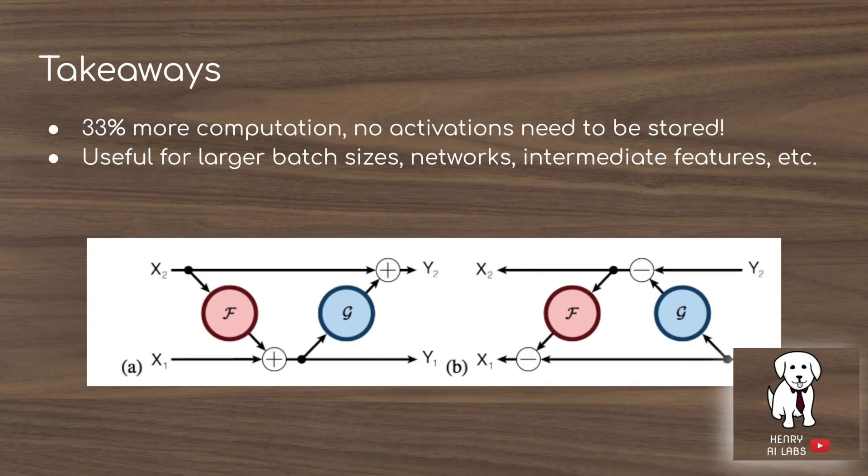The big takeaway is that it's 33% more computation required, but you save yourself a ton of memory. This is really useful for larger batch sizes, networks, and just the size of your intermediate feature maps. A frequent problem that I encounter is running out of GPU memory, and this is a really great method for avoiding that.